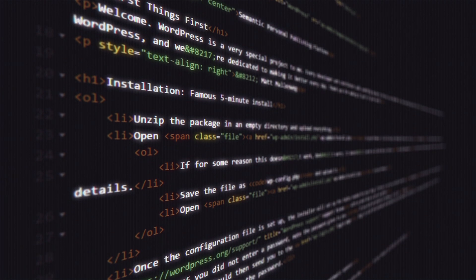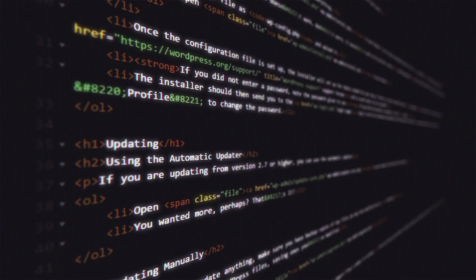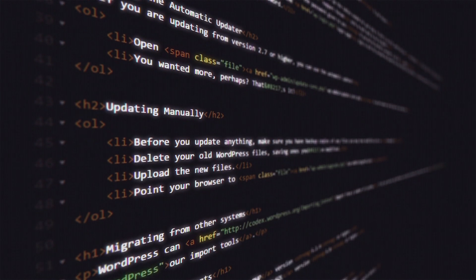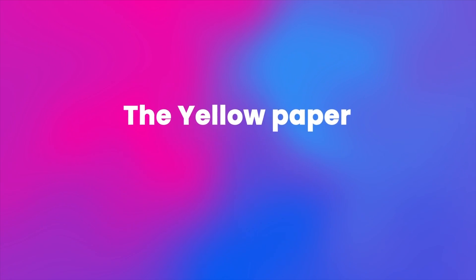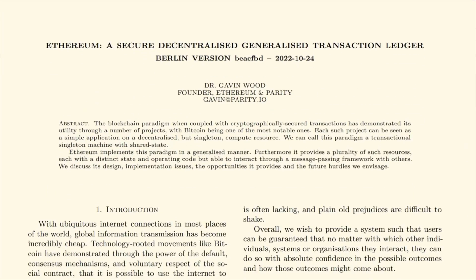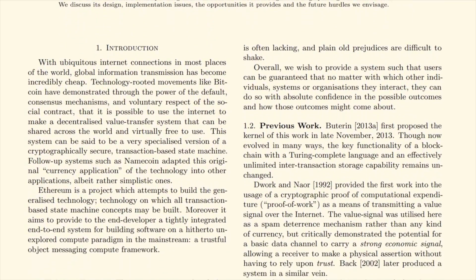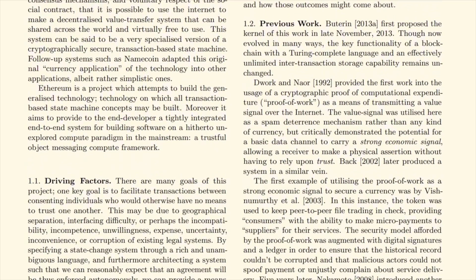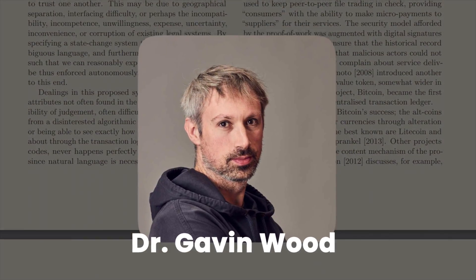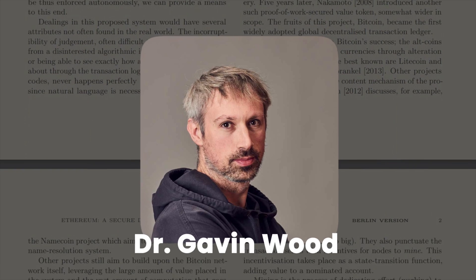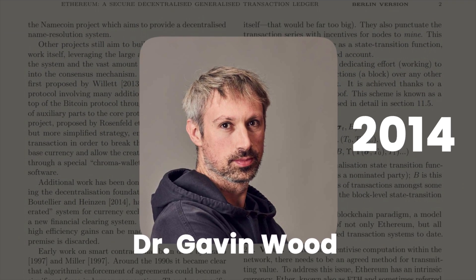And for the most curious who really want to understand the math behind Ethereum, there is the yellow paper — a technical document that provides a formal specification of the Ethereum Virtual Machine. It was written by Dr. Gavin Wood, one of the co-founders of Ethereum, and was published in 2014.